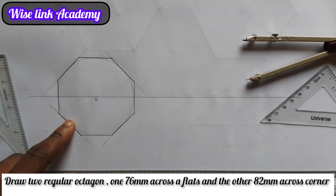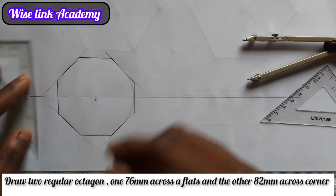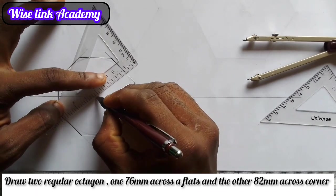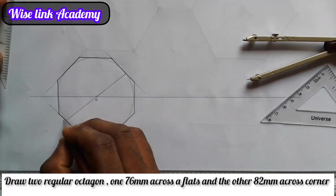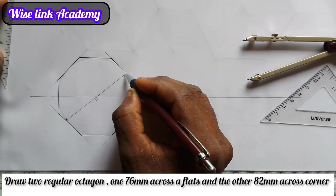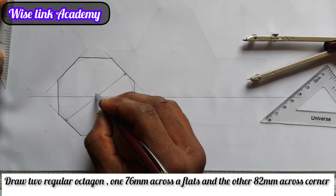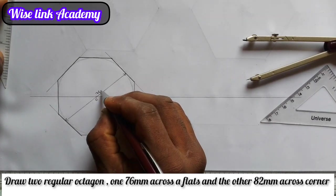Here is my across flat. So my across flat from this point here to this point, right from this point here to this point, is 76 millimeter across flats. So I have this.